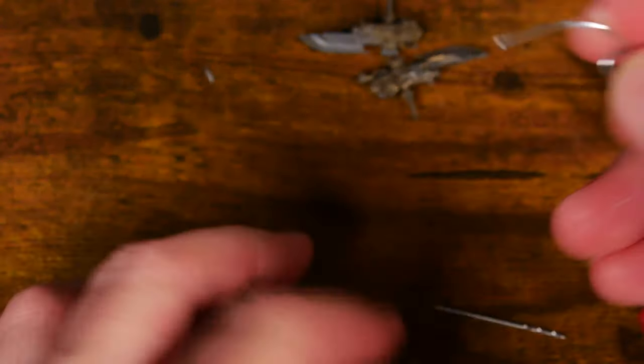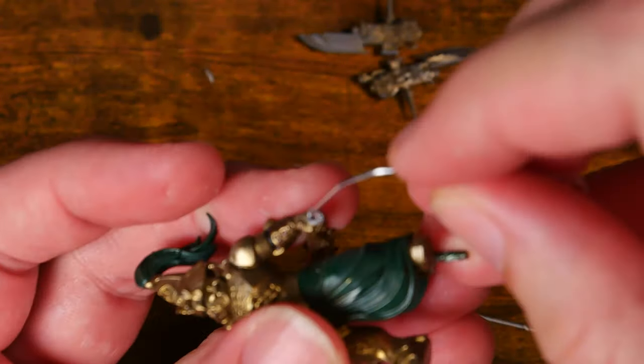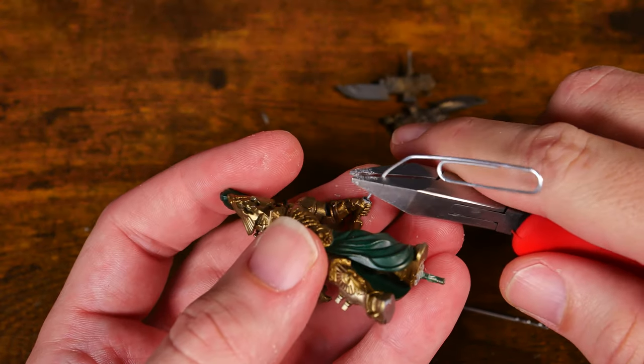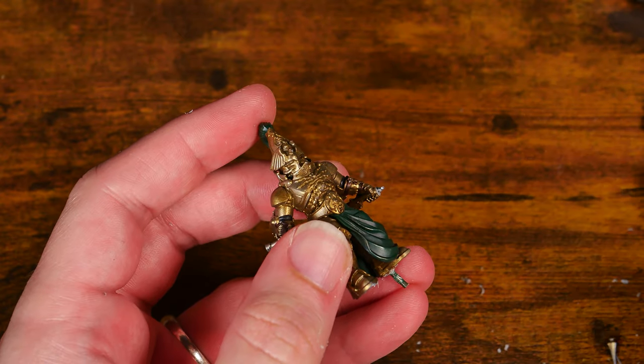After that, it's really just a matter of inserting your paperclip into one side of the weapon, cutting it to length, and then gluing the other side on, and you're done.